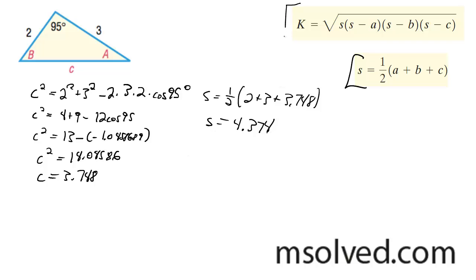Now I can find my k value, so k is going to be equal to square root of 4.374 times 4.374 minus 2 times 4.374 minus 3 times 4.374 minus 3.748.